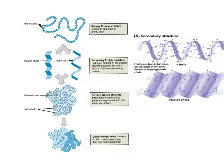Tertiary structure is when all of these local foldings start to fold globally. This is where amino acids that are very far apart in the chain — amino acid 10 might interact with amino acid 430 — because of global folding. The key things to remember about tertiary structure is these are formed by interactions of the amino acid side chains. Secondary was the backbone; tertiary is the amino acid side chains. There are five types of interactions the side chains can make: hydrogen bonds, hydrophobic interactions, ionic bonds, van der Waals interactions, and disulfide bridges.